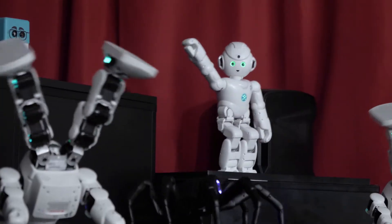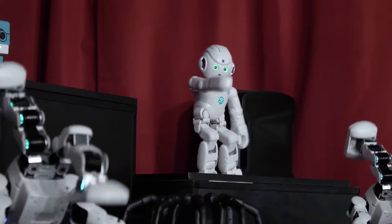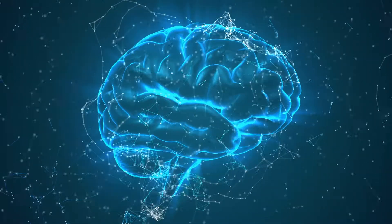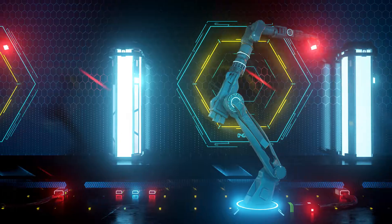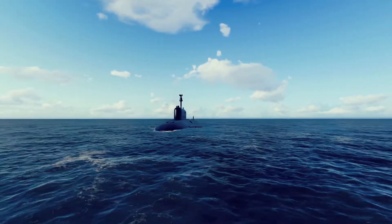Hacking humanly: the Turing test approach. The first thing that comes to our mind when building a robot is whether a robot can act like a human. In 1950, Alan Turing's famous paper 'Computing Machinery and Intelligence' suggested that instead of asking if a machine can think, we should ask if a machine can pass a behavioral intelligence test. Later, computer scientist Edsger Dijkstra also acknowledged the same: 'The question of whether a machine can think is about as relevant as the question of whether submarines can swim.'